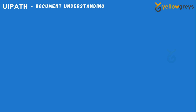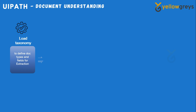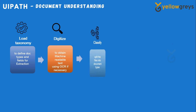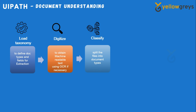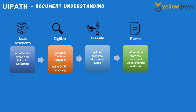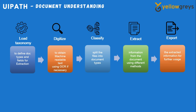Recap: Load Taxonomy — define your document types and fields for extraction. Digitize — convert files into readable text using OCR. Classify — split the files into document types. Extract — extract information from the document using different methods. Export — export the extracted information for further use. Thank you for watching; connect with us for more tutorials.